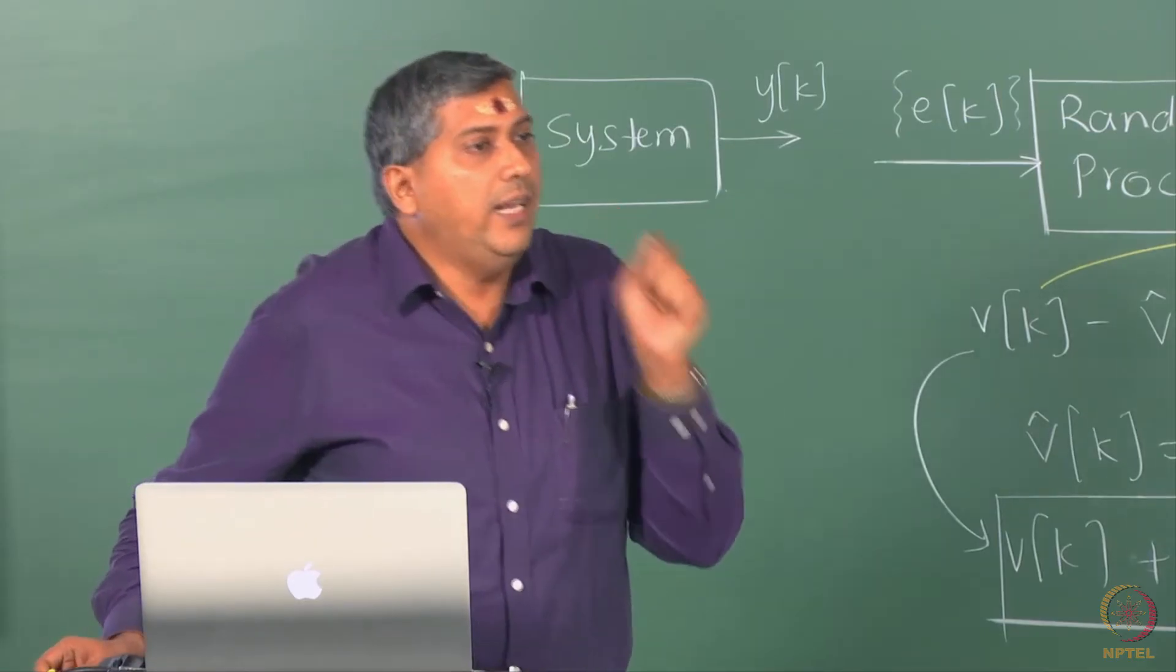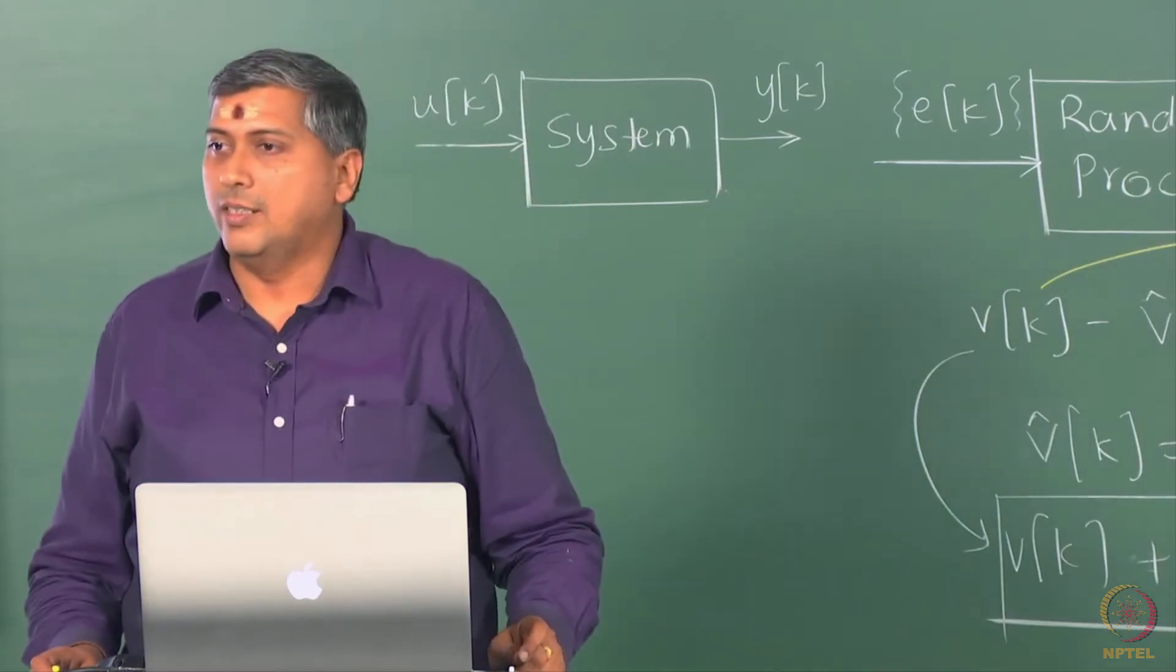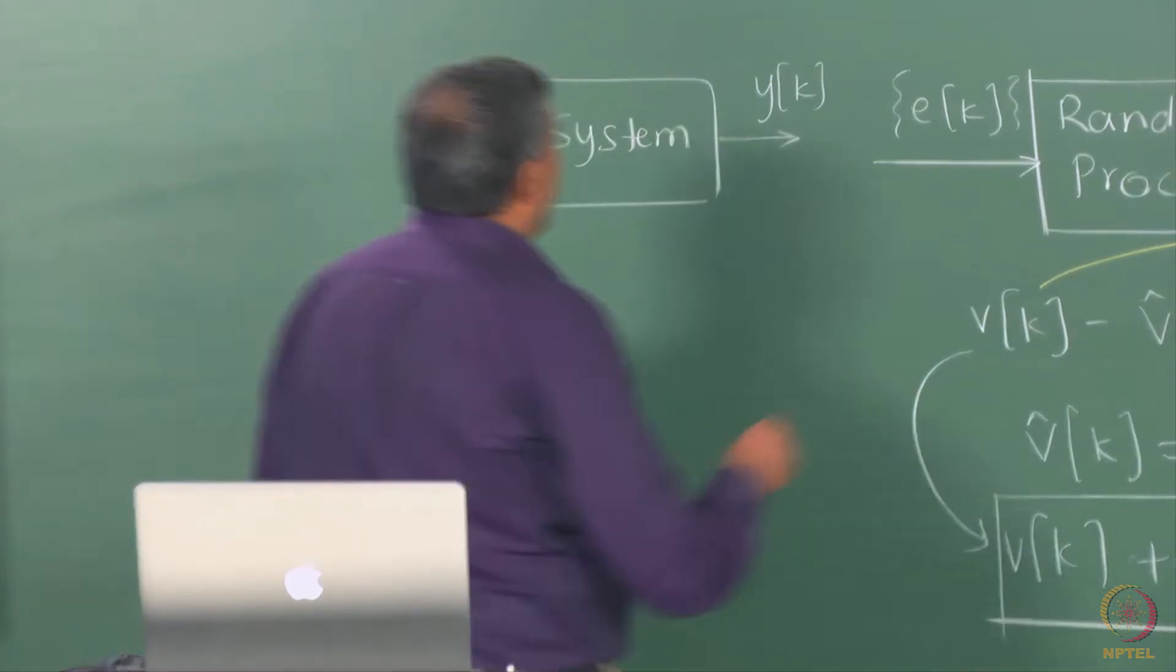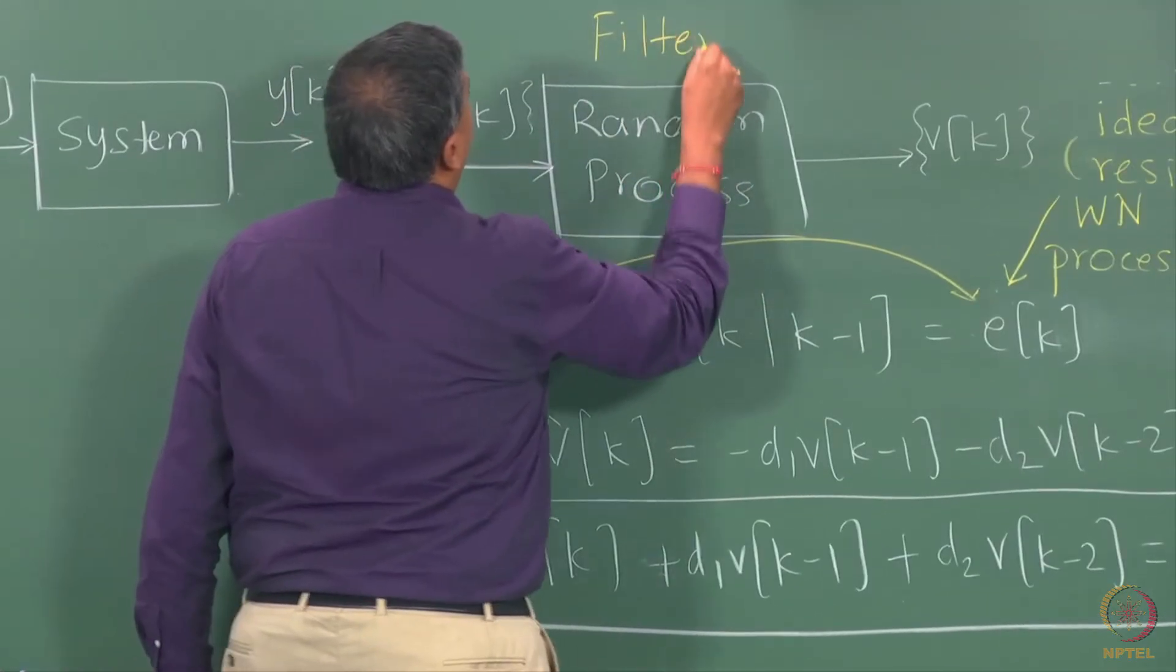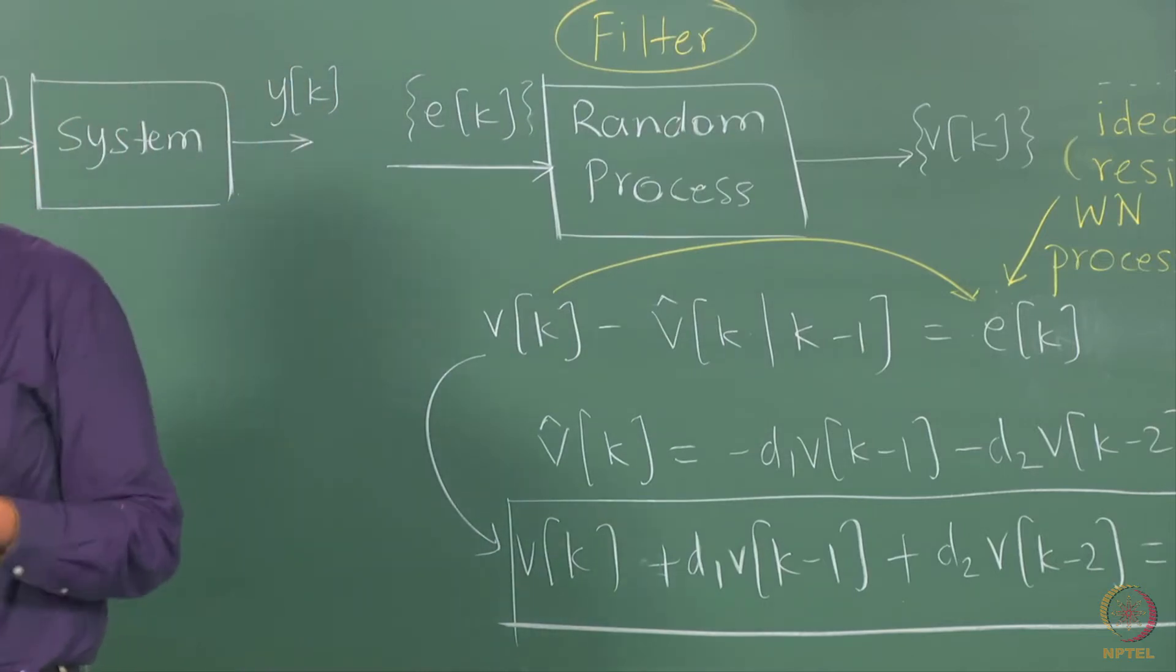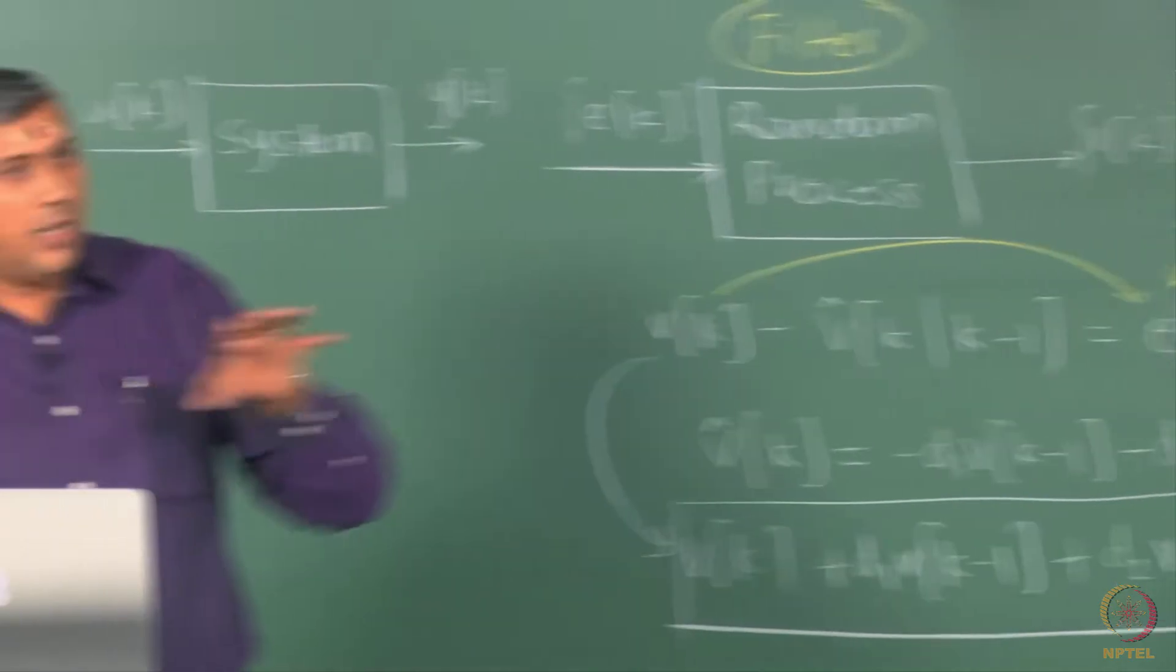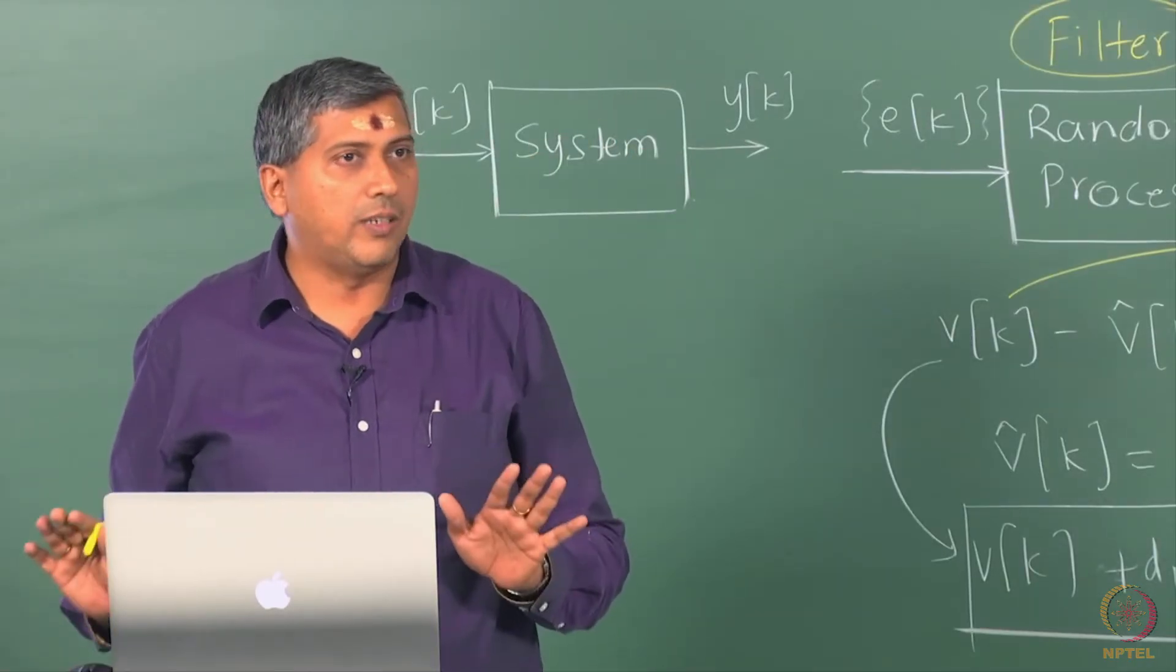And then they ask the question which or what class of random processes can be expressed as this white noise passing through some kind of a filter. We will understand this filter term later on. When we go through the frequency domain descriptions, the term filter will become a lot more obvious.